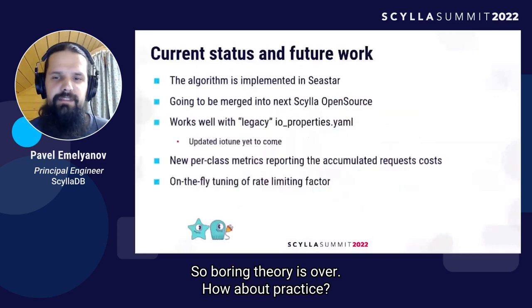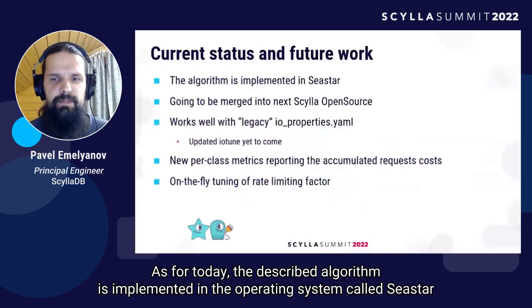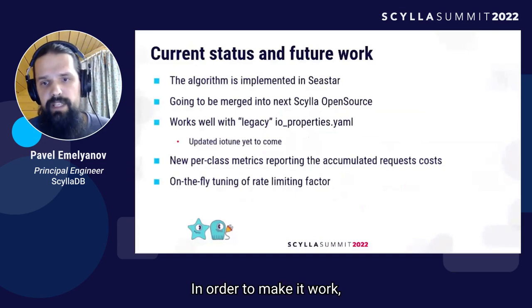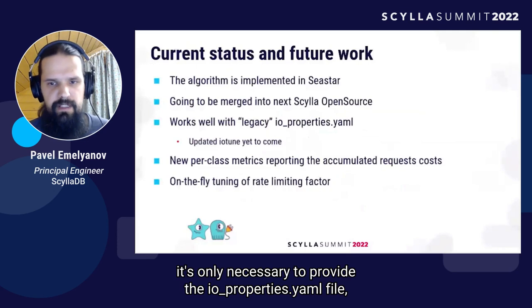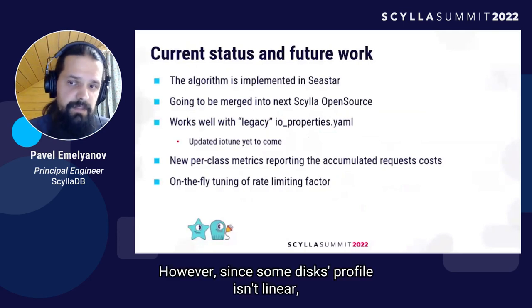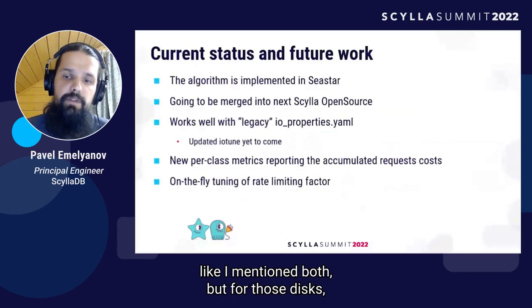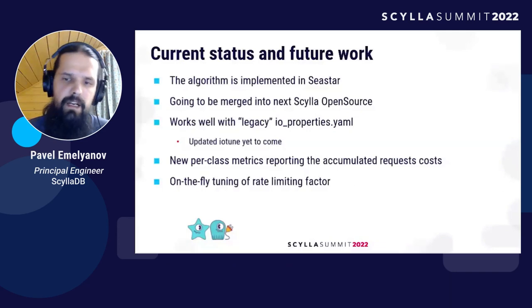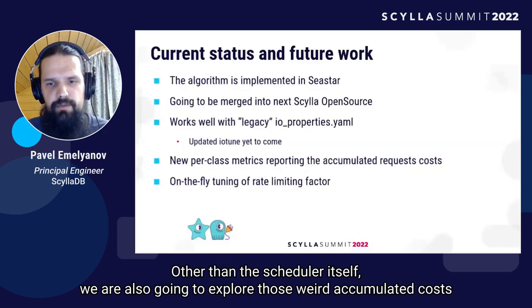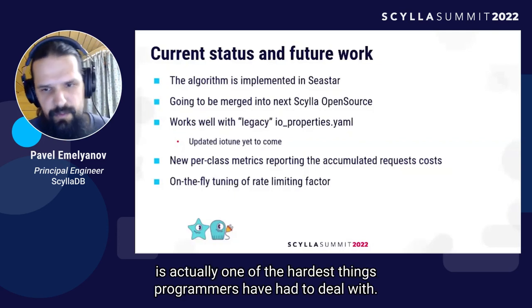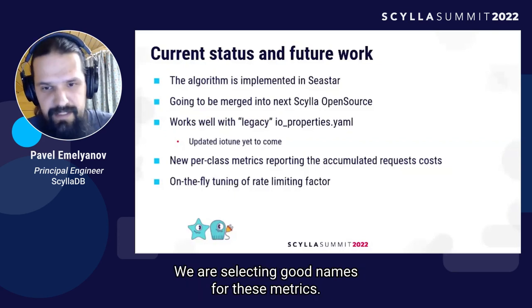Boring theory is over — how about practice? As of today, the described algorithm is implemented in the operating system called CSTAR, on top of which Scylla is built. Scylla itself is going to have that CSTAR version in the next release. In order to make it work, it's only necessary to provide the IO properties YAML file, even one generated by the IOtune tool from an older Scylla version. However, since some disks' profiles aren't linear, a manual update of the IO properties file might be needed — but we are going to automate this as well. We are also going to export those accumulated costs in seconds via Prometheus metrics. The reason it's not yet there is actually one of the hardest things programmers have to deal with: selecting a good name for this metric.